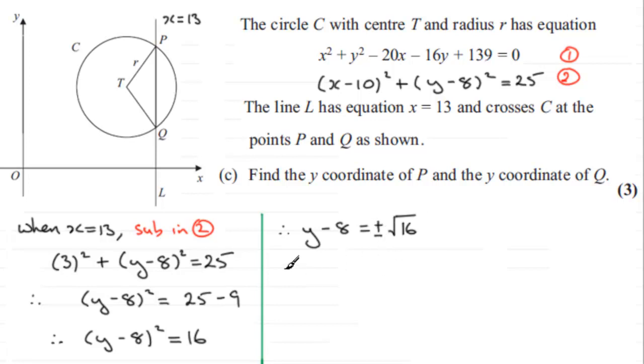So that means that therefore we've got y - 8 equals plus 4. That's the square root of 16 if we take the positive value. And if we take the negative value, we have got y - 8 equaling negative 4.